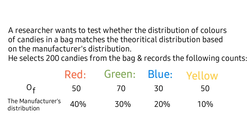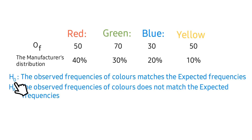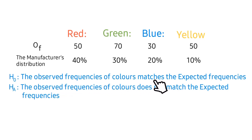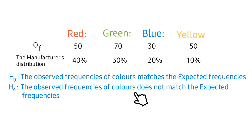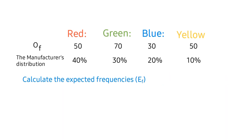To test if the observed frequencies match the manufacturer's distribution, first we state the hypotheses. The null hypothesis states that the observed frequencies of colors match the expected frequencies, while the alternative hypothesis states that the observed frequencies of colors do not match the expected frequencies.